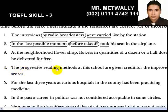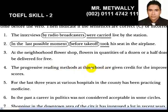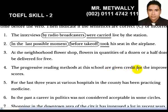Number 4: 'For the progressive reading methods' — 'for' is a preposition, so this is a prepositional phrase that works as an object of the preposition. 'Are given' is the verb, and 'credit for the improved test scores' follows. 'For' is a preposition, making another prepositional phrase. This is also a correct sentence.